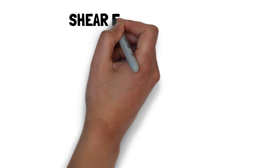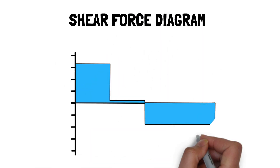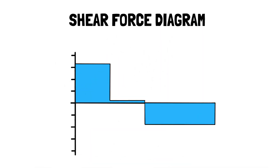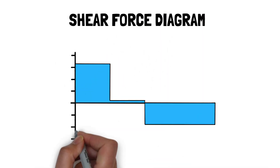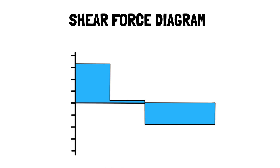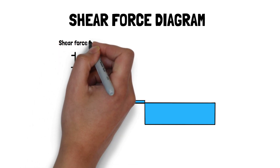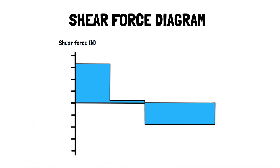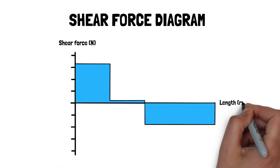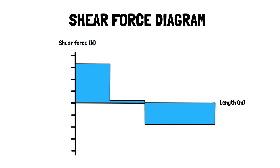The shear force diagram shows the variation of the shear force along the length of the beam. The vertical axis represents the magnitude of the shear force and the horizontal axis represents the length of the beam. The diagram is typically shown with positive values of shear force above the horizontal axis and negative values below the axis.